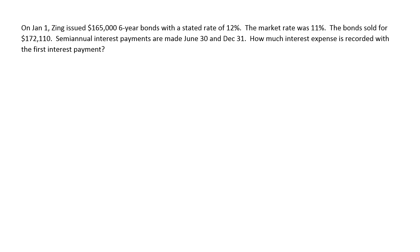In this problem we're looking at how much interest expense is recorded in our first interest payment. One of the key things here is that we're using the effective interest rate method to amortize. If you understand what you're doing with the effective interest rate method, you can calculate this very quickly. I'm going to take it a little bit slower, make it more deliberate, and explain the process. At the end I'll show you how we could have just banged this thing out, but the only reason you can do that is if you really understand the process.